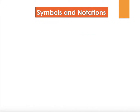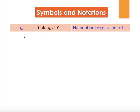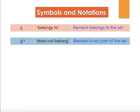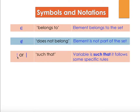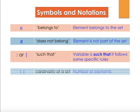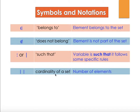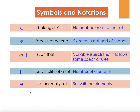Let's review the symbols and notations used. The epsilon or E-like symbol means an element belongs to the set. With a slash across it, it means does not belong. A colon or vertical line means 'such that.' Two parallel lines around a set name give the cardinality — the number of elements. The circle with a slash is the null or empty set.